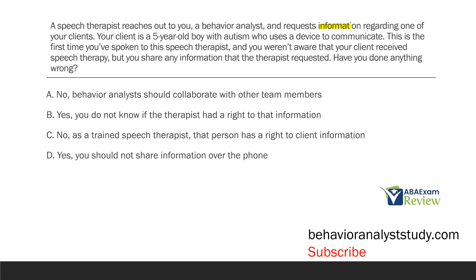The most important thing to remember with information is privacy. We have to consider HIPAA and our ethical code. Above all else, you have to maintain privacy for your clients. One of the first things you should do in practice when you get a new client is figure out what kind of consent and permission you need to obtain whatever records you require, because analyzing historical records, therapy records, and school records is very important to our initial assessments. The first thing you want to do is make sure you have that consent.